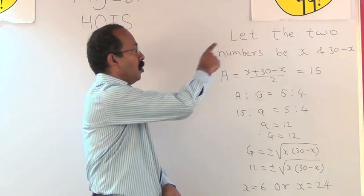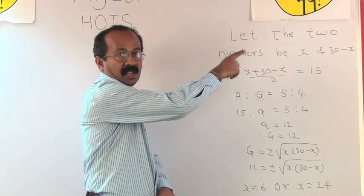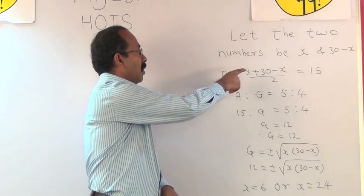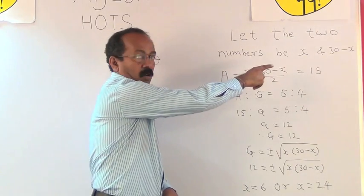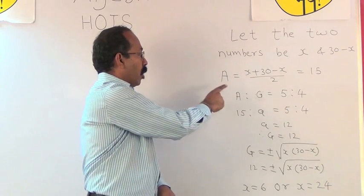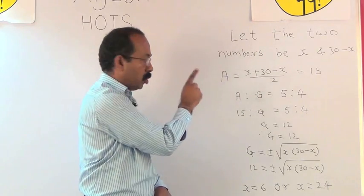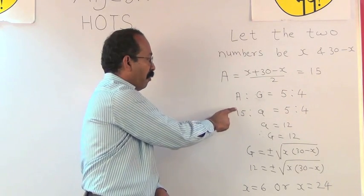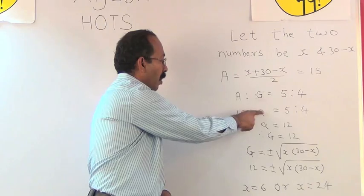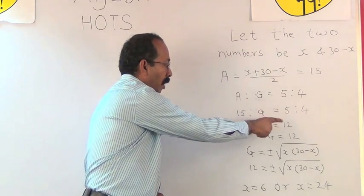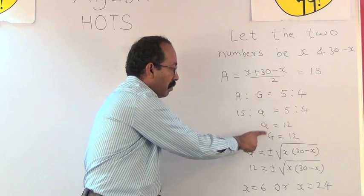Now let the two numbers be x and 30 minus x. So arithmetic mean is equal to x plus 30 minus x upon 2, which equals 15. Now the ratio of arithmetic mean to geometric mean is given as 5 is to 4. So substituting the values we get 15 is to G equals 5 is to 4. So G equals 12, meaning the value of geometric mean is 12.